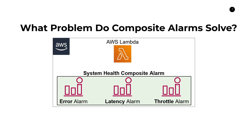With this approach you can customize when the composite alarm fires using Boolean logic. You can say: when either the error alarm, latency alarm, or throttle alarm fires, then send one email notification. Instead of having multiple notifications firing independently, you create a link between all of them with one top-level composite alarm that does all the heavy lifting — so you only receive one notification.